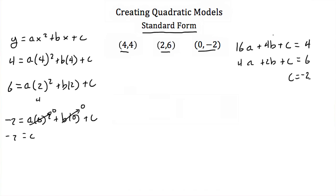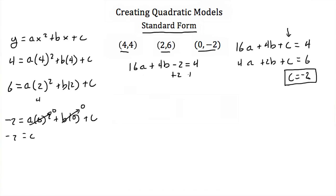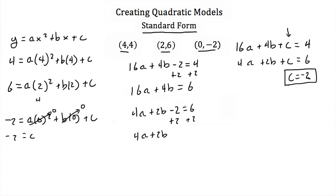I can solve these using substitution or elimination and solve for my a, b, and c. Our last equation helps us out a lot — it reduces down to c is equal to negative 2. Since I know that c is equal to negative 2, I can plug that back into the other two equations. So I'll get 16a plus 4b minus 2 is equal to 4. If I add 2 to both sides, I'll get 16a plus 4b is equal to 6. Plugging in negative 2 for c in the next equation gives 4a plus 2b minus 2 is equal to 6, so 4a plus 2b is equal to 8.